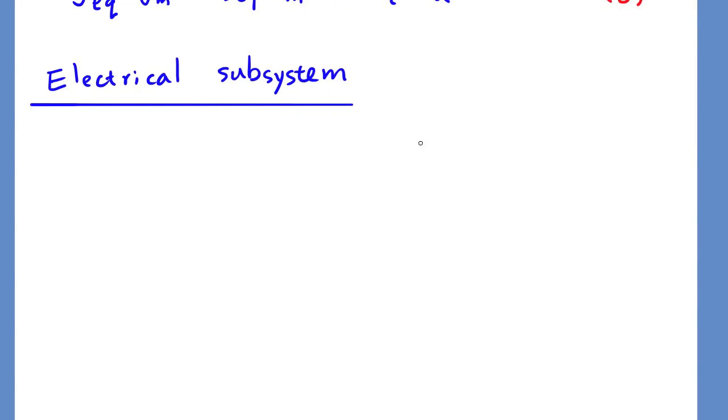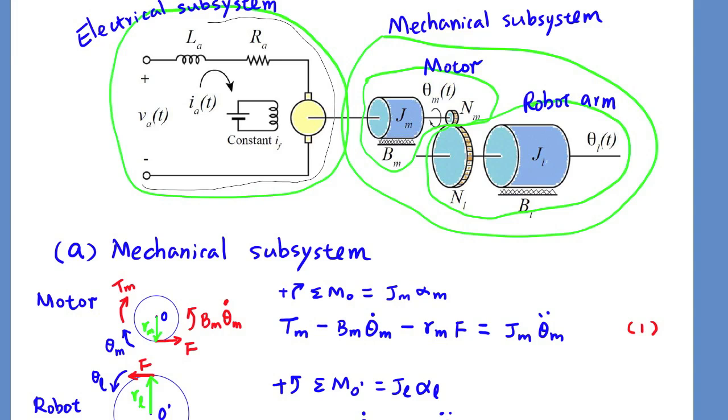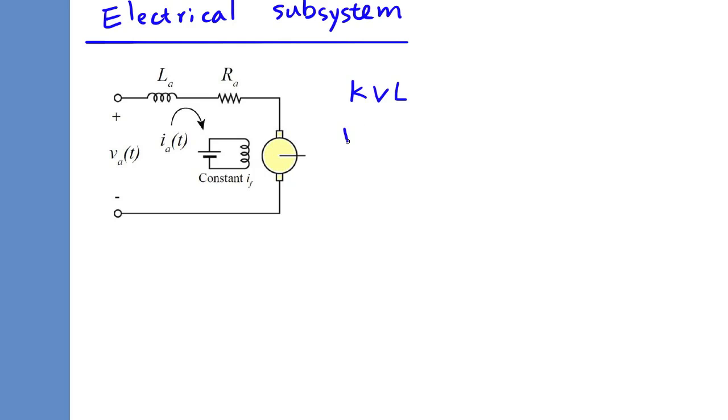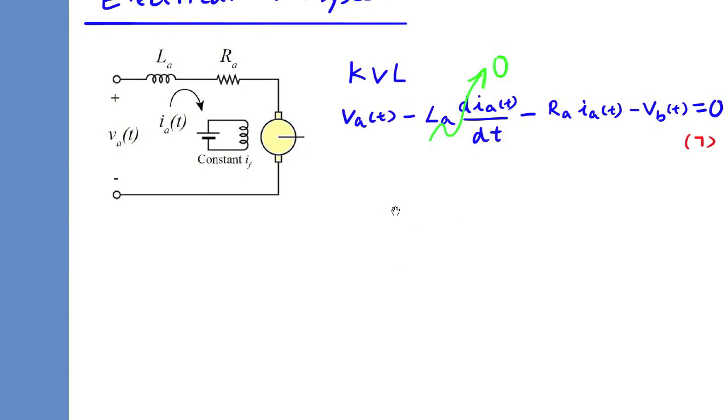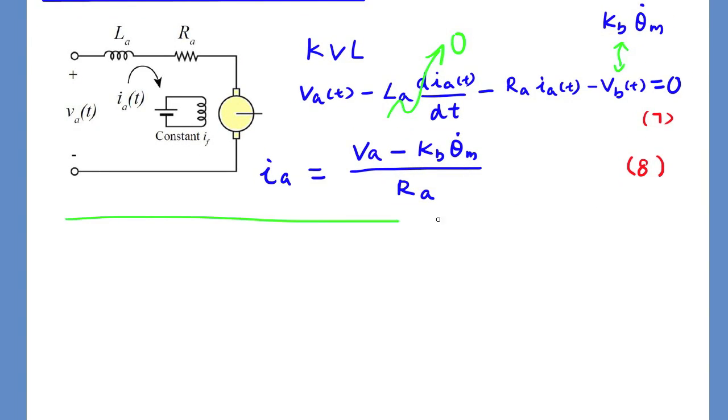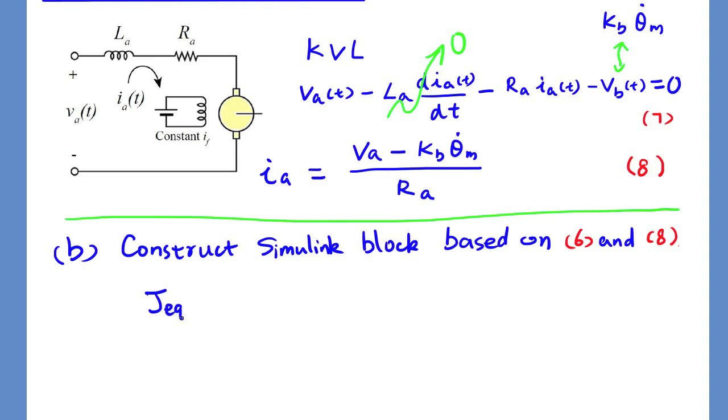Let's rewrite this in equation number 6. Next, let's work on electrical subsystem. Based on Kirchhoff's voltage law, the voltage drop over this whole loop is 0. Here, La is 0, so we can solve for the armature current, which is a function of Va and angular velocity of the motor shaft theta M dot.